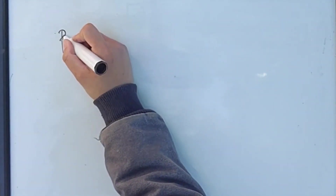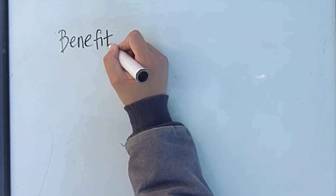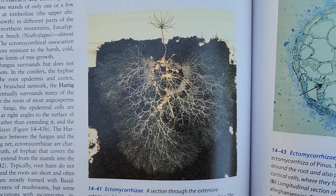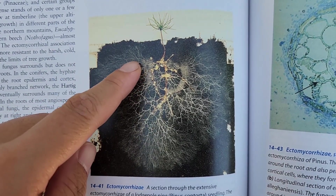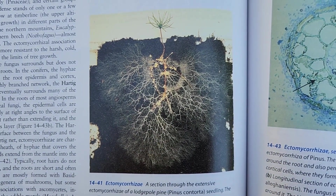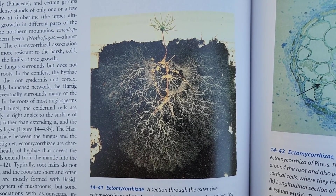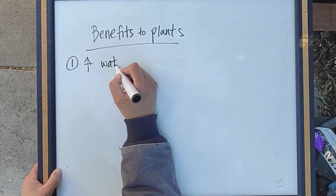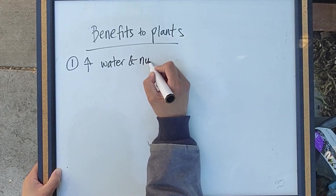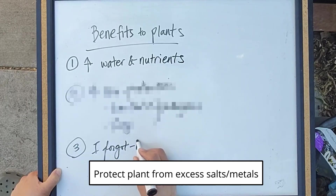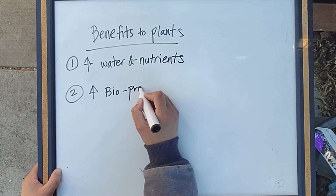What's the benefit to a plant of having mycorrhizae? Mycorrhizal fungi exist everywhere, and in nature these associations form very naturally. The fungus expands the surface area of a tree's root system by as much as 10 percent, extending it further into the soil into smaller crevices where roots would never reach. By doing that, it helps the plant get more water and more nutrients, especially certain nutrients like phosphorus, which may not be very soluble in the soil. They may also protect the plant from excess salts and metals in the soil and can offer some biological protection as well.